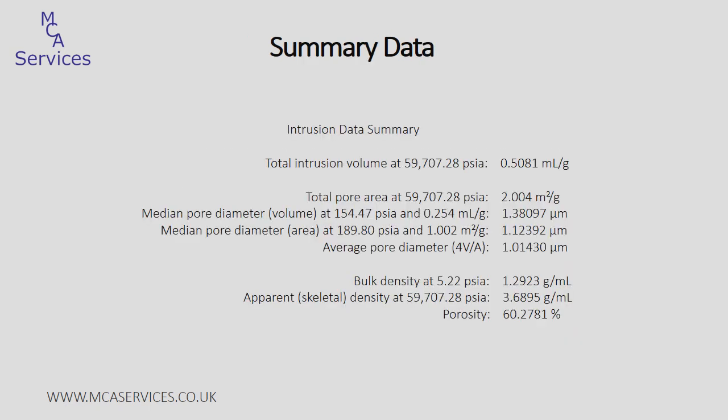From this data, we can also get some more values, shown here in the summary report. It starts with the total intrusion volume, or pore volume, of 0.51 millilitres per gram. We have a few different calculations for pore sizes, both by area and by volume. And we also have a pore area — that's the area of the pore walls — just over 2 square metres per gram. This is based on a model of cylindrical pore geometry.